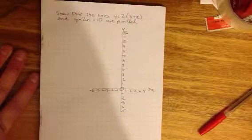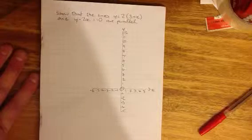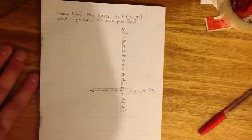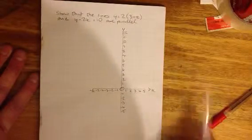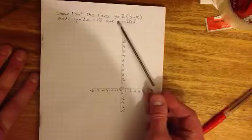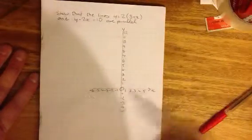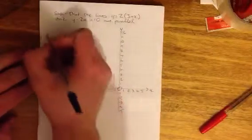OK, now I'm going to answer this question which asks us to show that the lines y equals 2 open brackets 3 plus x close brackets and y minus 2x equals 10 are parallel. I'm going to do that by substituting in values for x and y, which will tell us where the lines cross the axes. So I'll start with the first one.